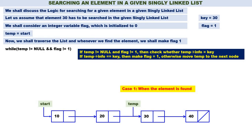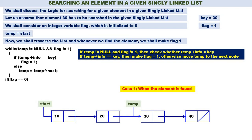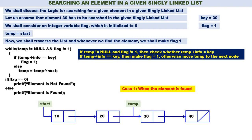So now the while loop has two conditions: while temp not equal to null and flag not equal to 1. Inside, if temp of info is equal to key, flag is equal to 1; otherwise temp is equal to temp of next. When you come out of the while loop, if flag is still 0, the element is not found; otherwise the element is found. In our case, since flag is equal to 1, the element is found — this is case 1.